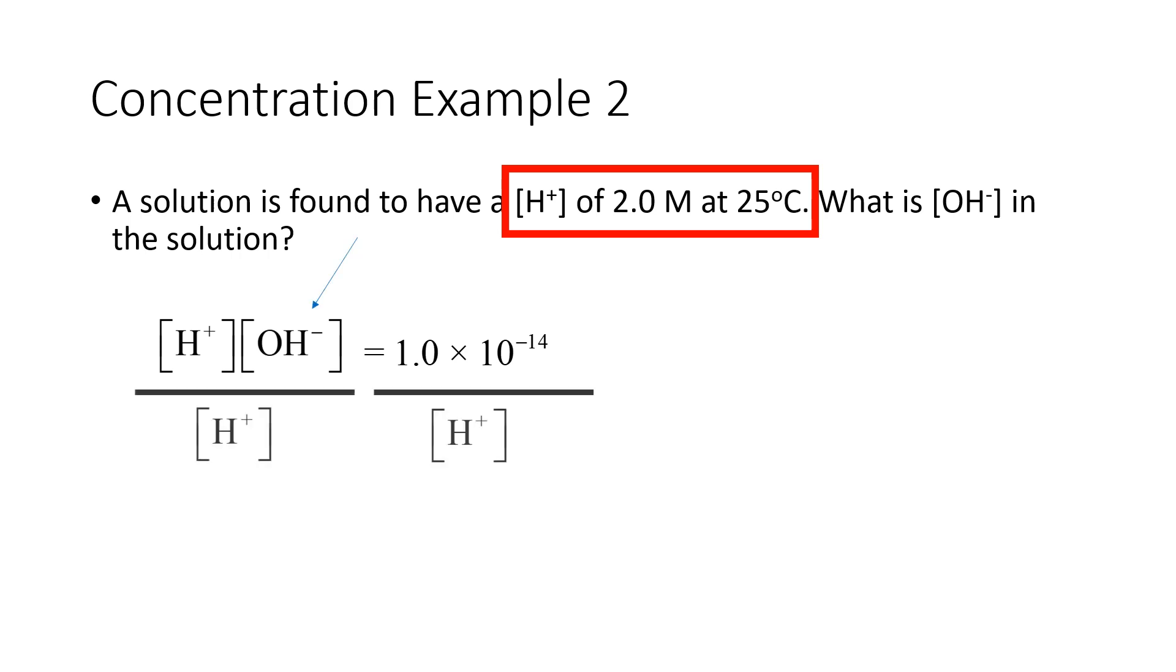We'll divide each side by the concentration of H+, and the H+ terms on the left-hand side will cancel. Substitute the H+ concentration into the expression, and the calculation gives us 5.0 times 10 raised to the minus 15 molar.